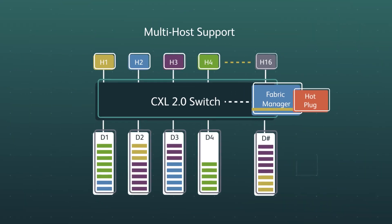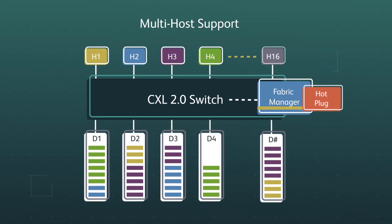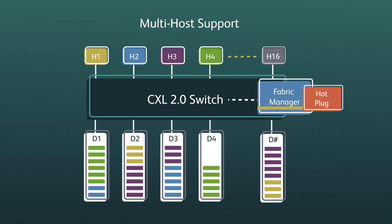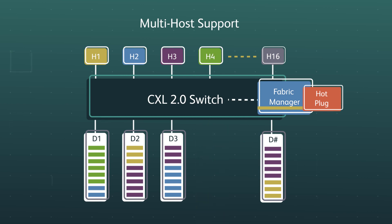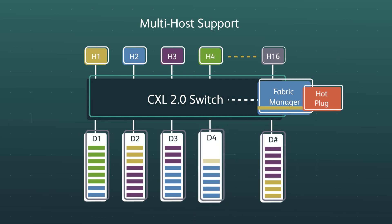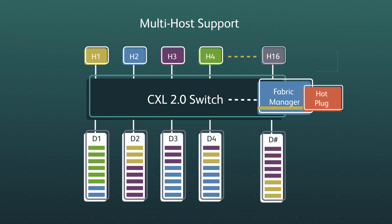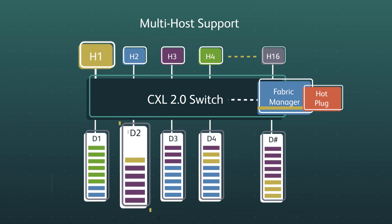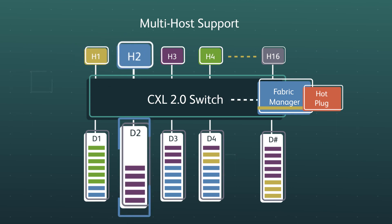To recap, CXL 2.0 introduced memory pooling with multi-logical devices, allowing a single memory device to be partitioned so it can be allocated across multiple hosts, and single-level switching enabling memory expansion and resource allocation.